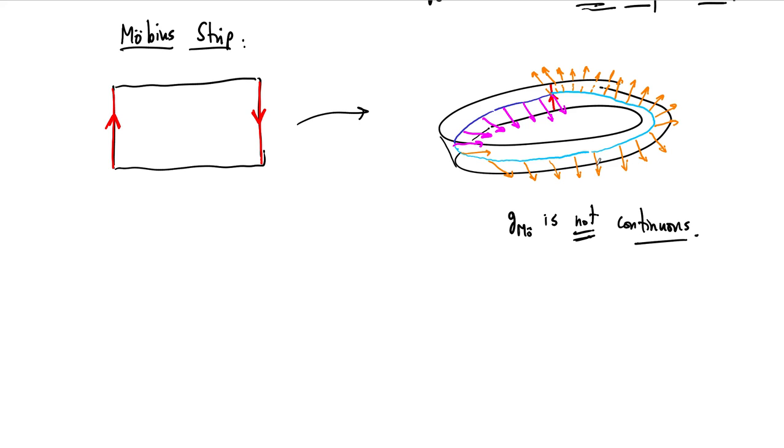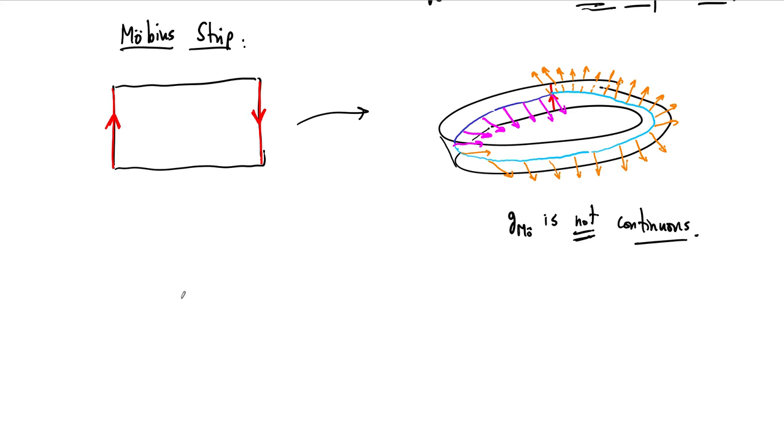So this Gauss map is not continuous, and what we say then is that this surface is not orientable. And in general, our definition is going to be exactly this. So a surface, and this is typed in the notes, but a surface is orientable if and only if, this is a definition, it has a continuous Gauss map. And what I mean by that is we can find a parametrization for which the Gauss map is continuous. And the continuous is the key here, even though I abbreviated it. That's the key.